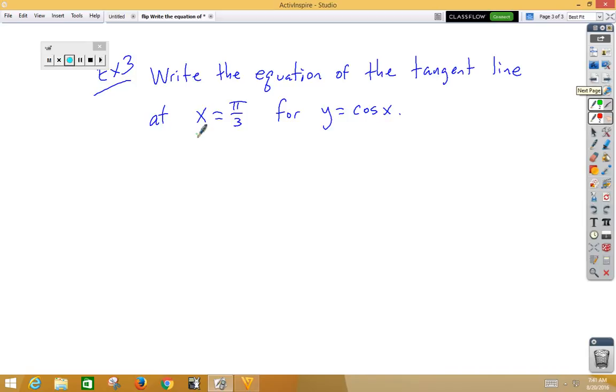x equals pi thirds. If I want to use pi thirds to get my y value, I'm going to go y is equal to cosine of pi thirds. Our special value tells us that that's going to be 1 half. So we have pi thirds, 1 half.